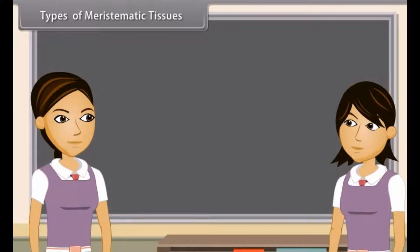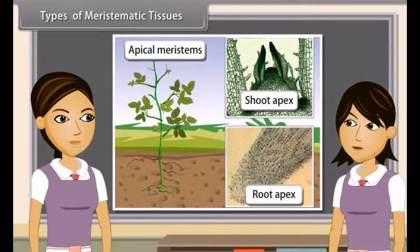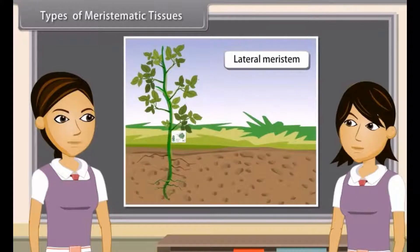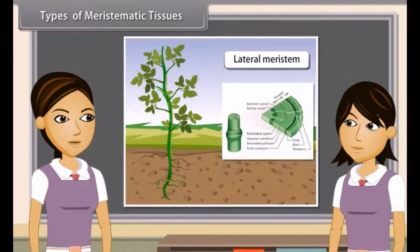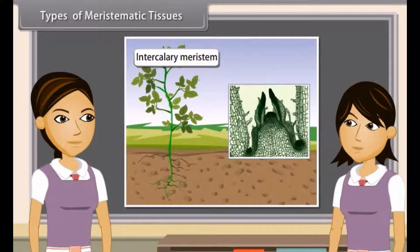Depending on the region where they are present, meristematic tissues are classified as apical, lateral and intercalary. The tissues present in the growing tips of stems and roots are known as apical meristem. The tissues present on the lateral side of roots and stems are lateral meristem. The tissues which lie on the base of internodes of stem are called intercalary meristem.